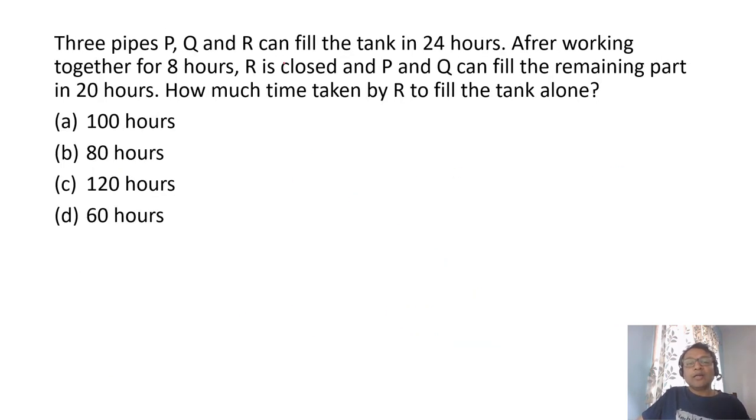Three pipes P, Q, R can fill the tank in 24 hours. Now if they work for 8 hours, that means 8 upon 24, one third of the tank is filled. So what is left is two third of a tank.